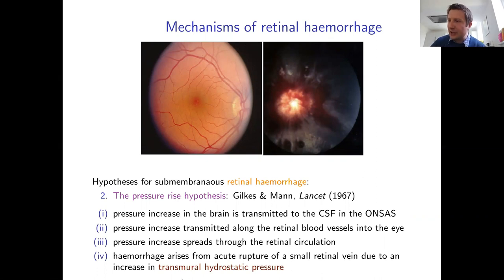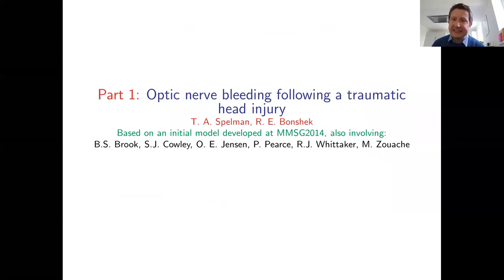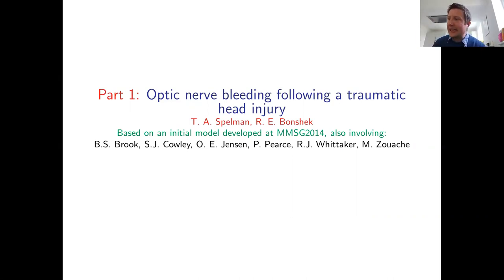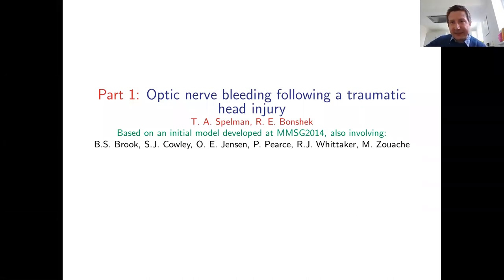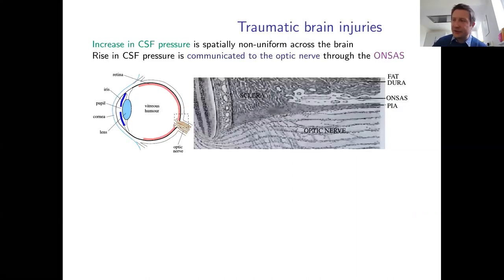The mathematical modeling was carried out primarily by Tamsin Spellman, a postdoc who did an excellent job producing almost all the simulations in this study. Collaborators include Richard Boncheck, a leading ocular pathologist in Manchester, and participants from the Mathematics and Medicine Study Group in 2014. The work builds on initial ideas from that study group. The optic nerve subarachnoid space will now be converted from a histological image into a mathematical model.